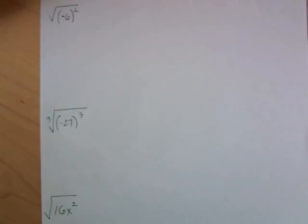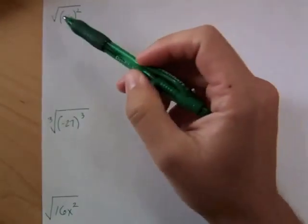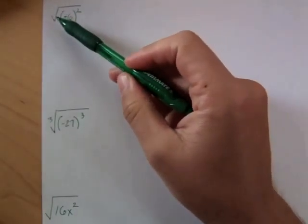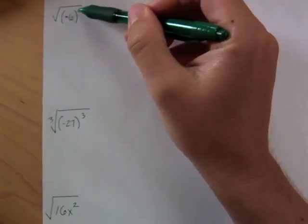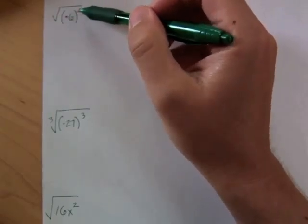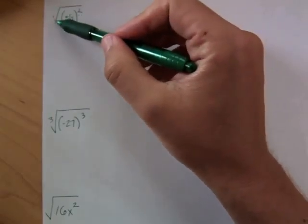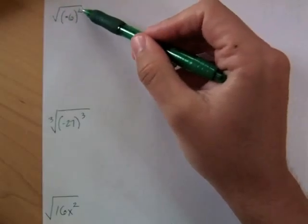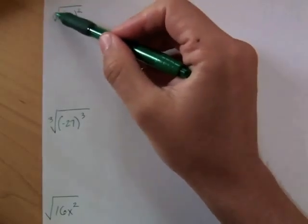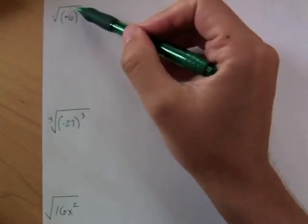Let's talk about a somewhat unusual type of problem involving radicals — problems where you are taking the square root, or the cubed root, or the fourth root, or whatever, of something that has an exponent. So for example, here we have the square root of negative 6 squared, so we have the square root of something that is squared.